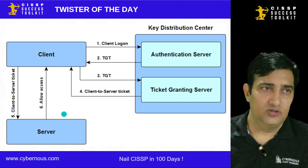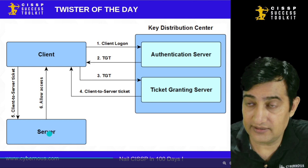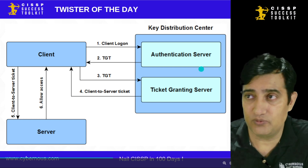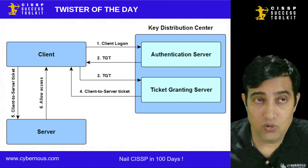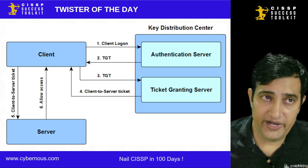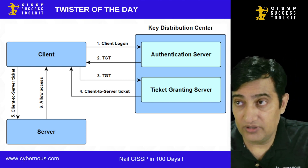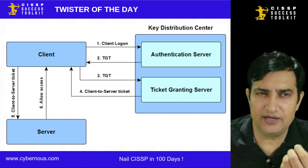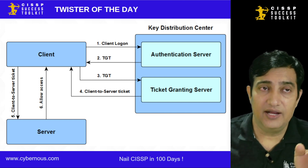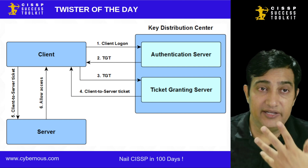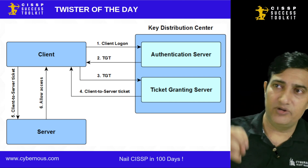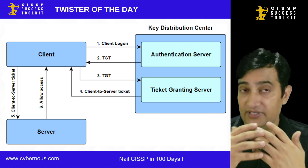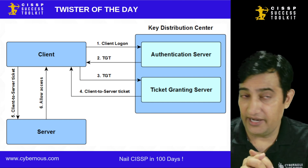Looking at the diagram: you are the client, there is the server you want to access, and there is the KDC responsible for authentication. When you arrive at the office and provide your username and password, your password is not sent on the wire. Instead, your password is used to encrypt some random text, and that encrypted value is sent along with your username to the KDC. The KDC finds your key from its directory, decrypts the message, and if decryption is successful, authentication is confirmed.